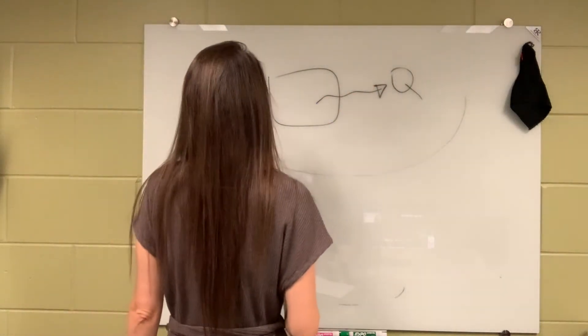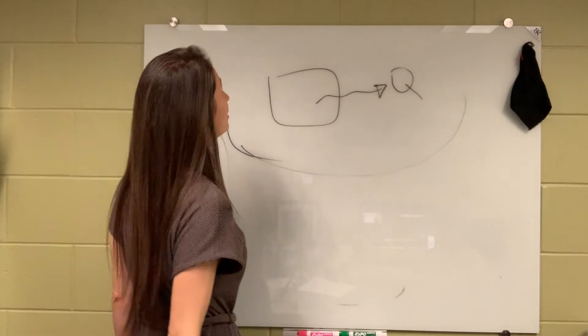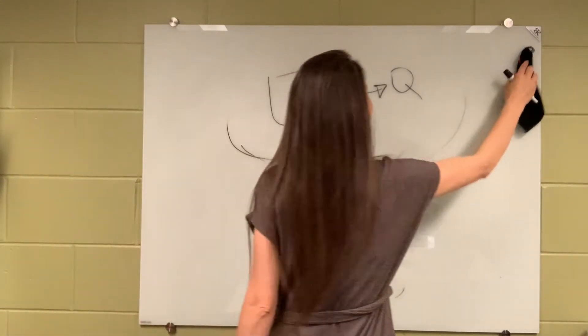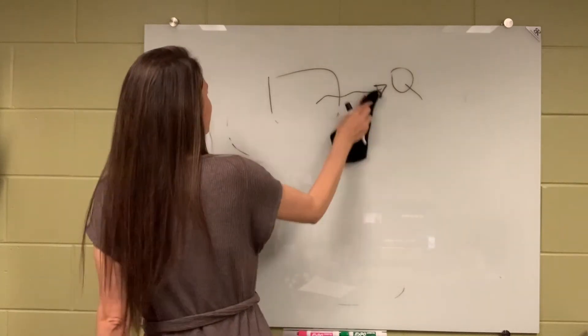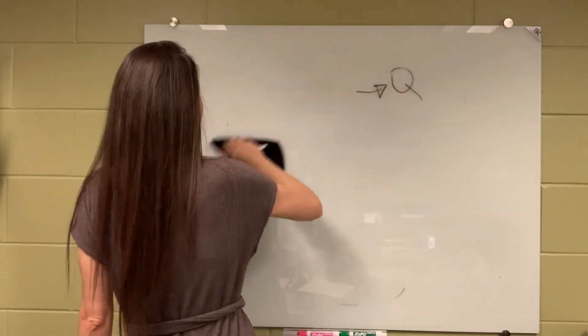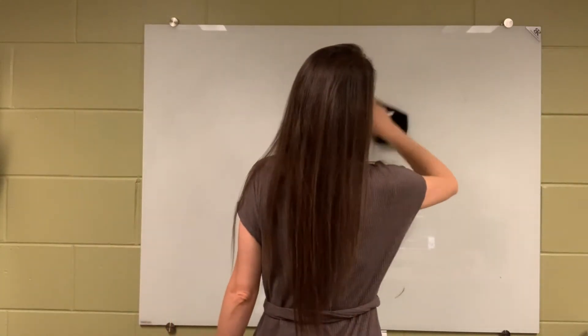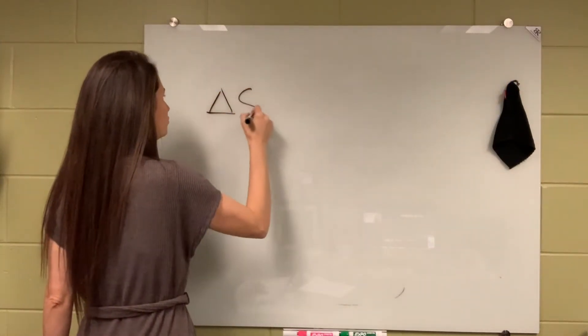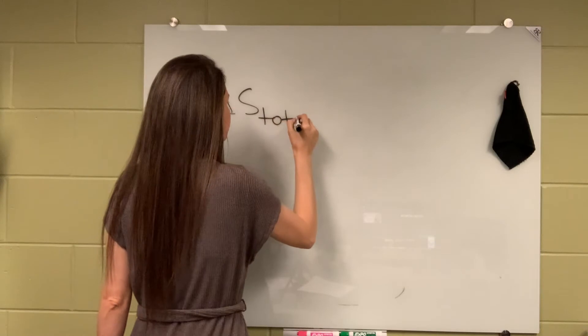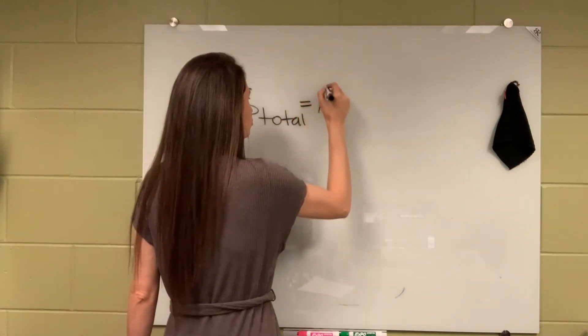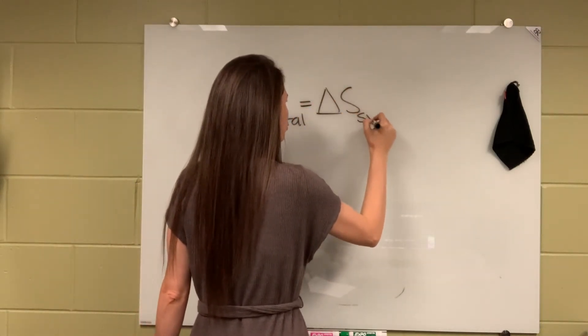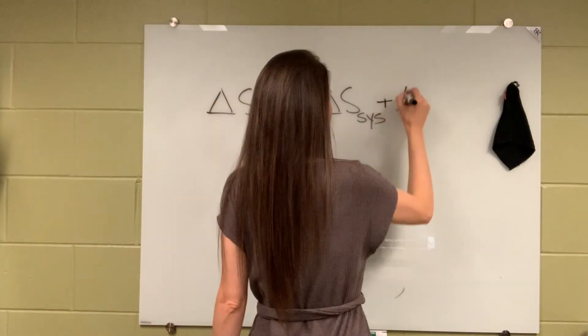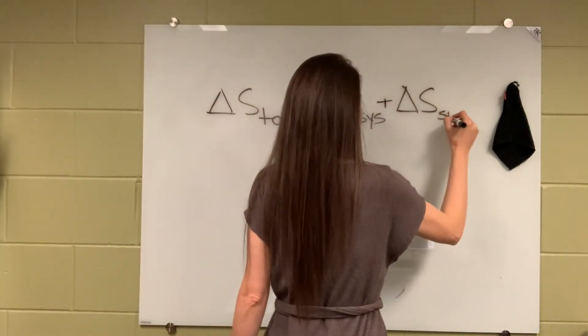So all right, so based on that, total entropy change should be equal to the entropy change of the system itself plus entropy change of the surrounding.